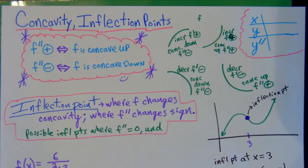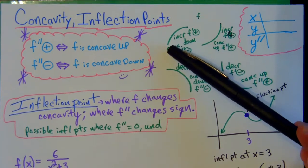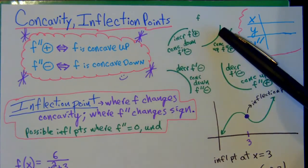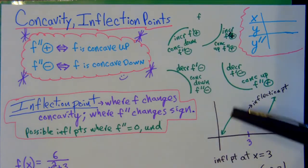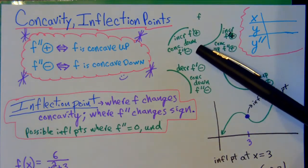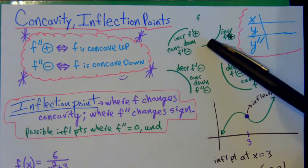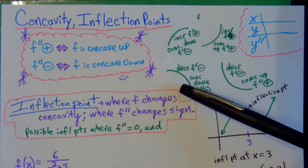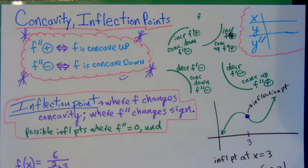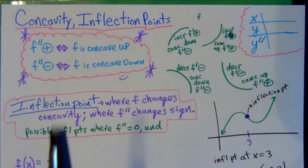If you only know whether a graph is increasing or decreasing, you don't know the whole story. If I tell you to draw an increasing curve, you could draw it like this or like that. This shape is called concave up — when you hold the water — and this is called concave down — when it's spilling the water. That's what the second derivative will tell us.